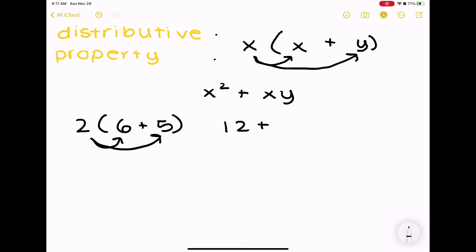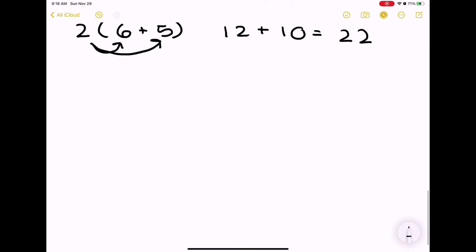So, let's say we have 2 and parentheses 6 plus 5. Well, if we distribute the 2, we will get 12 plus 10, and that is equal to 22. And also, if we go ahead and just do the parentheses first because of PEMDAS, we have 11 times 2, which is equal to 22. Distributive property is more used in algebra, as I said, so it won't apply that much if you're taking currently some basic arithmetic.